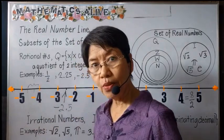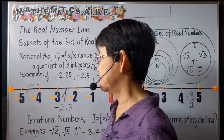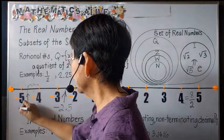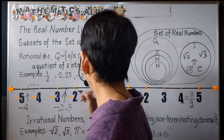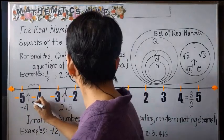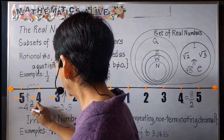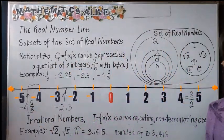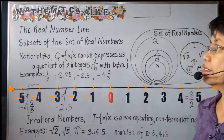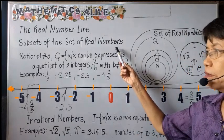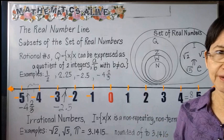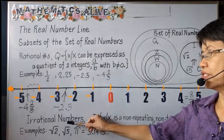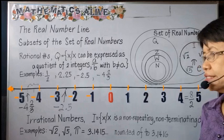So this is the point negative 4 and two-thirds. Another set which is a subset of the set of real numbers, but not belonging to the set of rational numbers, is the set of irrational numbers, set I.